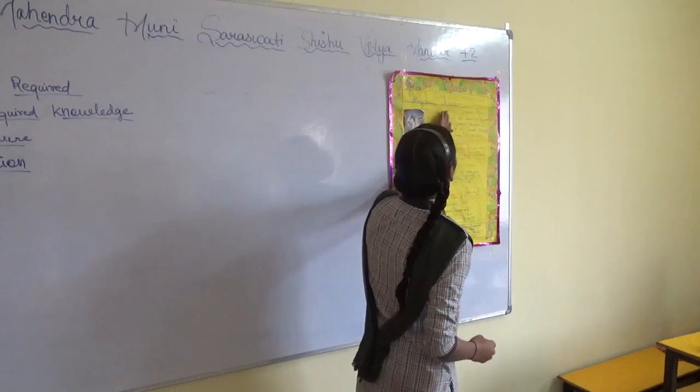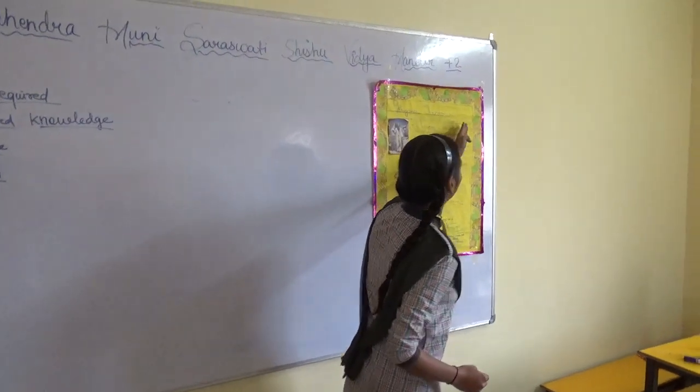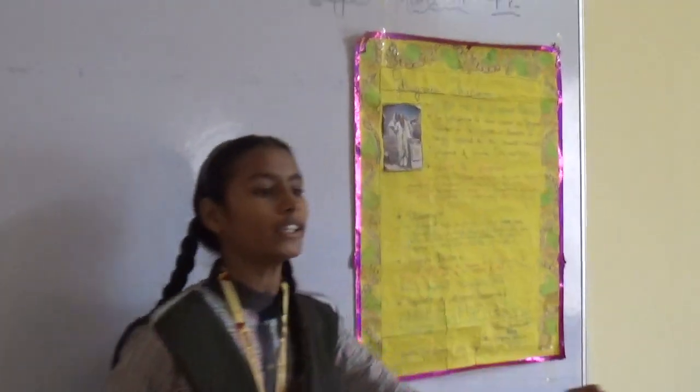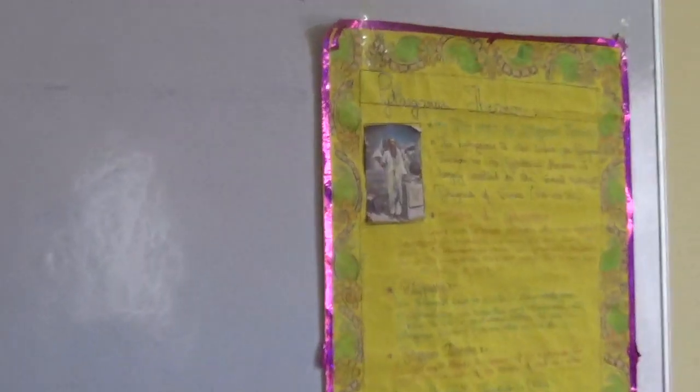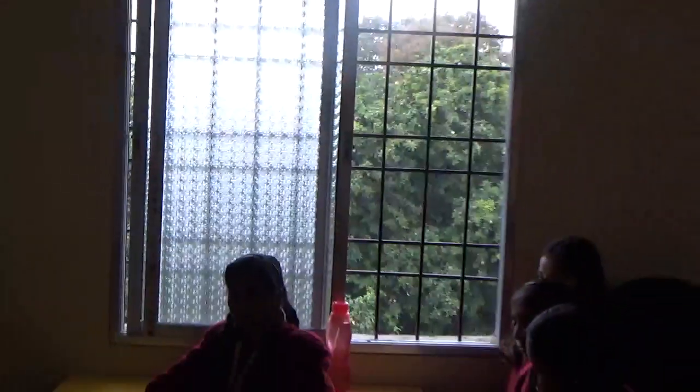The other name of Pythagoras theorem — what is the other name of Pythagoras theorem? The other name of Pythagoras theorem is the Hypotenuse theorem.